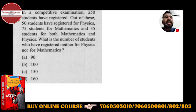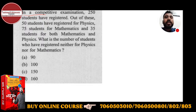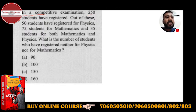We will see this question and how we will solve it. What is given in this question: in a competitive exam — these are all questions based on the recent CDS exam — 250 students have registered. Out of these, 50 students have registered for Physics, 75 students for Mathematics, and 35 students for both Maths and Physics. So, what is the number of students who have registered neither for Physics nor for Mathematics?